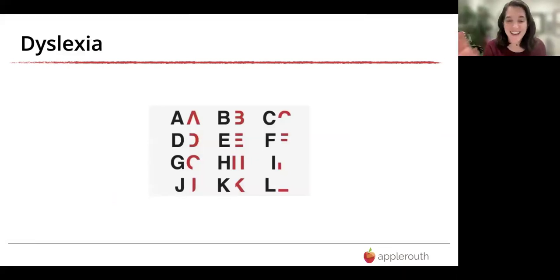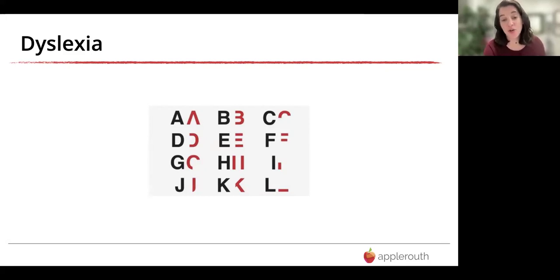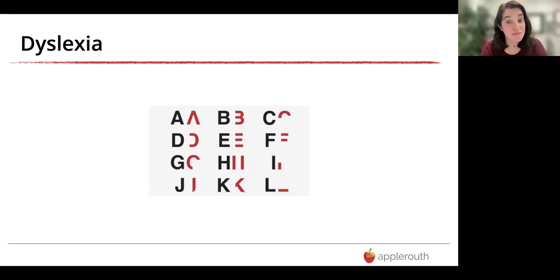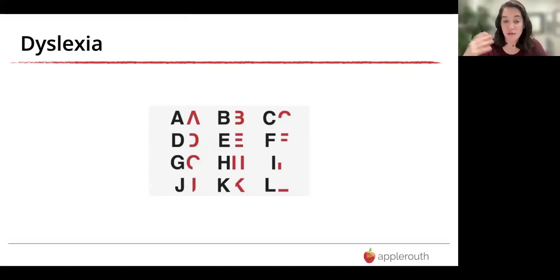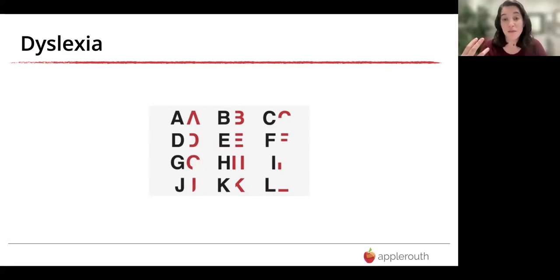Moving on to dyslexia — I use this example of a font not because it's literally what dyslexics see when reading. It was actually created by an artist who wanted to give neurotypical people a glimpse into what it's like to read as a dyslexic person — how can you make letters technically different but still really hard to decode. I think it's a fascinating experiment to build empathy for what's going on, and it's not somebody being difficult or stupid — all kinds of negative things that have been said about people with dyslexia unfairly and inaccurately.